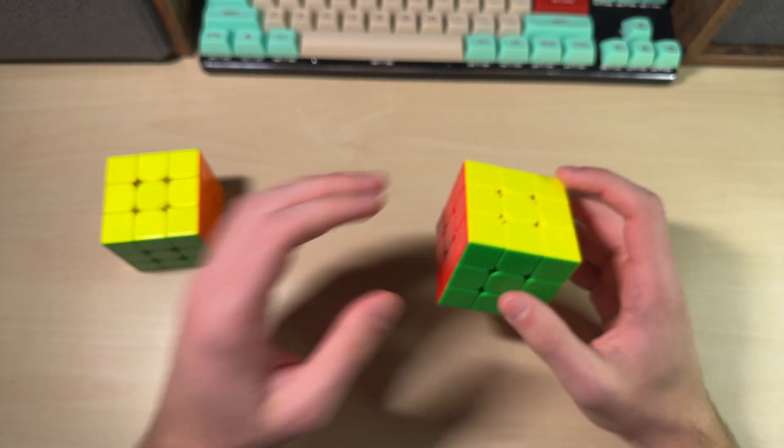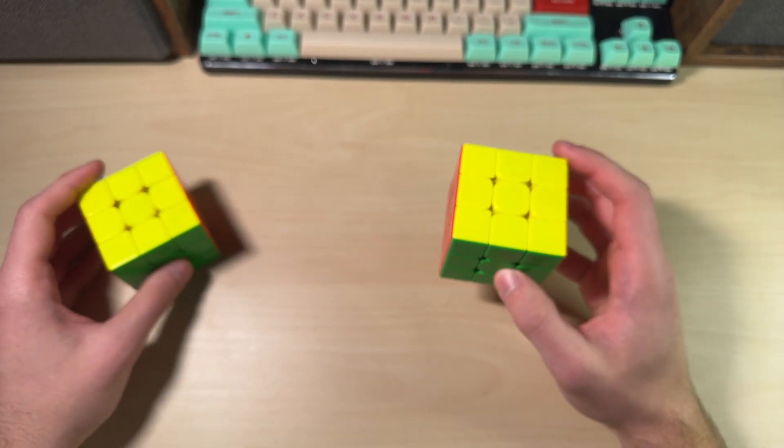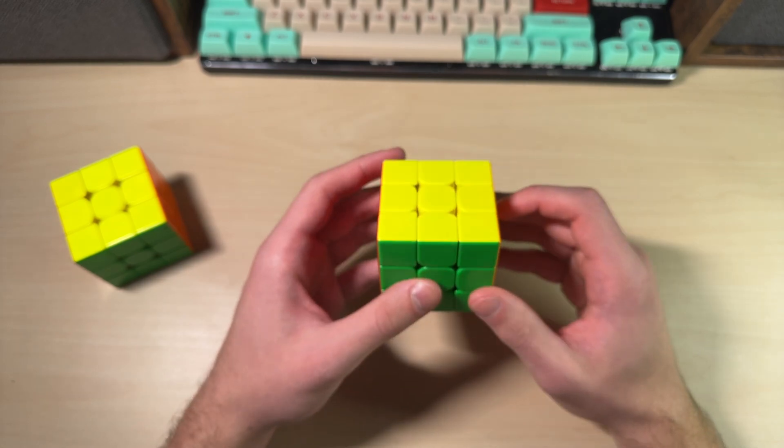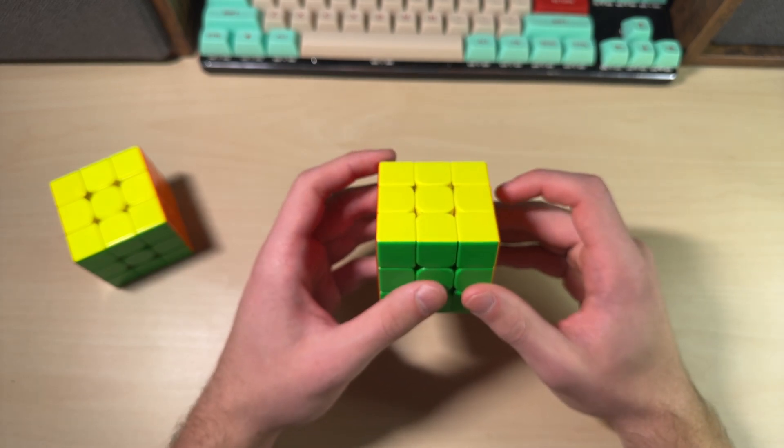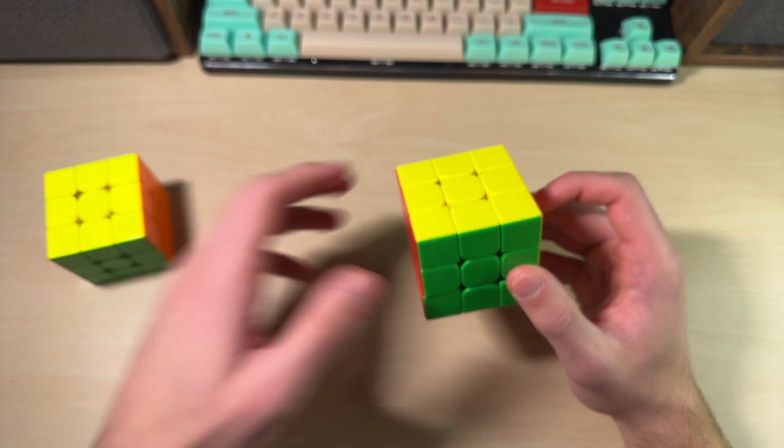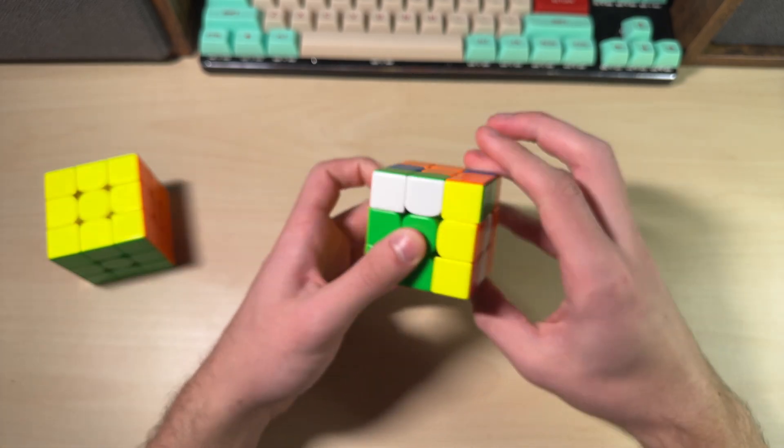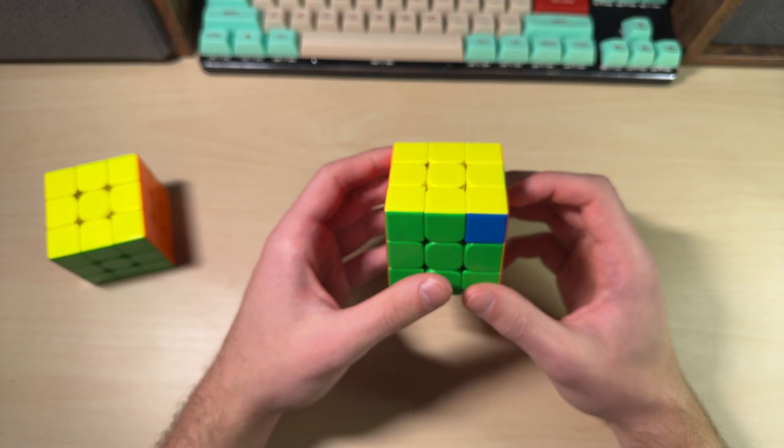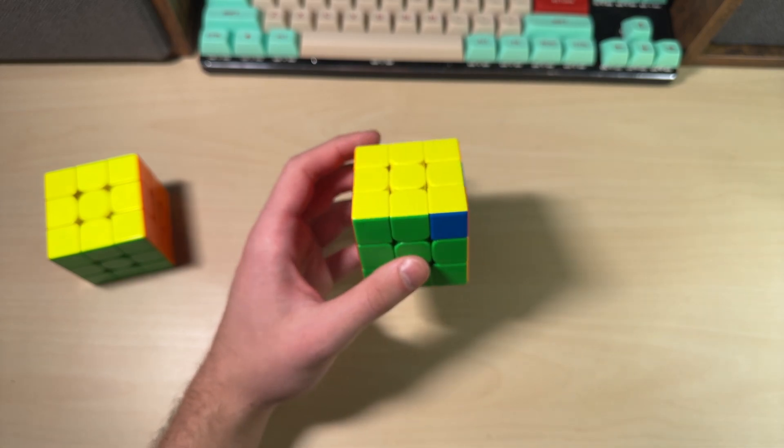But the reason that I recommend using this alg over this one is because I feel like the execution for the inverse of my alg is just a little bit awkward to do and doesn't flow very nicely in solves. It's much harder to do fast in my opinion.